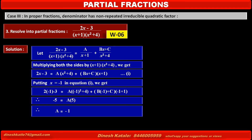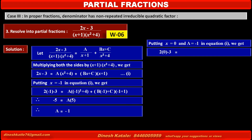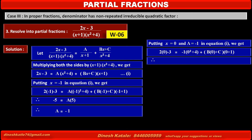To find the value of C, we cancel the term with B by taking x equal to 0. Putting x equal to 0 and A equal to minus 1 in equation 1, the left-hand side gives 0 minus 3 equals minus 3. The right-hand side becomes minus 1(0 squared plus 4) plus (B(0) plus C)(0 plus 1). Solving, we get C equal to 0.